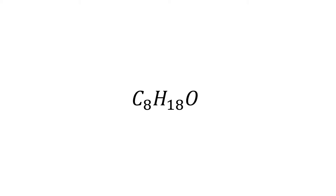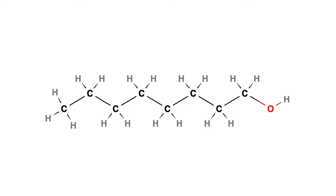One octanol. One octanol is a molecule made up of these parts: eight carbon atoms, 18 hydrogen atoms, and one oxygen atom put together like this.